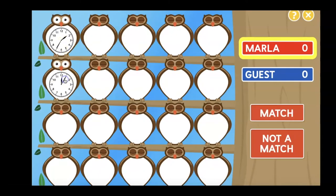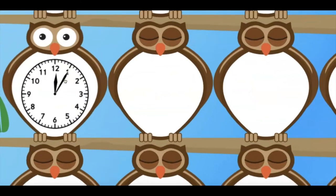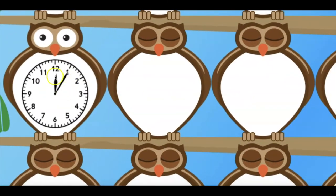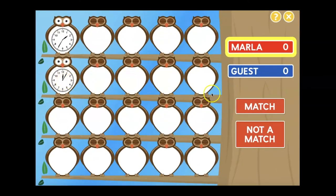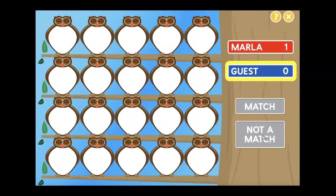The clock I chose said 12:05. Not a match. So now it's the next player's turn. The next player picks some owls and tries to make a match.